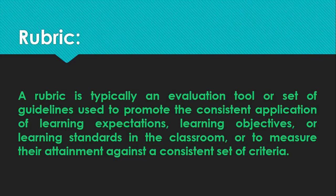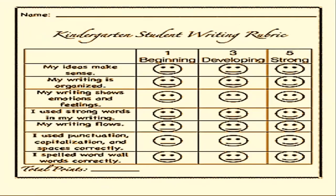Now I'm going to a very initial example of rubrics — a writing rubric made by a kindergarten student. In the rows you can see performance criteria, and in the columns you can see levels of checking. The criteria for this writing rubric include: my ideas make sense, my writing is organized, my writing shows emotions and feelings, I use strong words, and my writing flows.